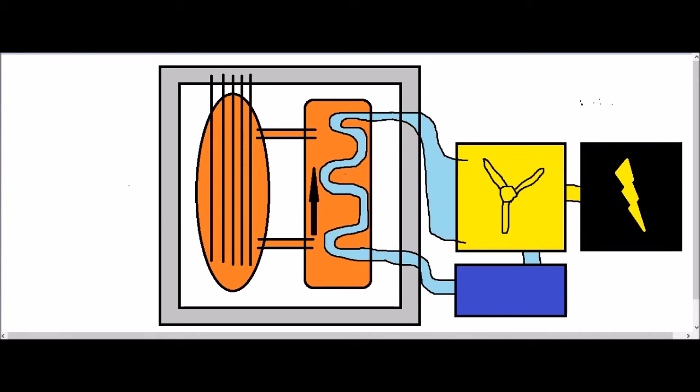So this is a basic diagram of the features of a nuclear power station. Here we have the reactor. This is where the uranium nuclei undergo fission, releasing huge amounts of energy.